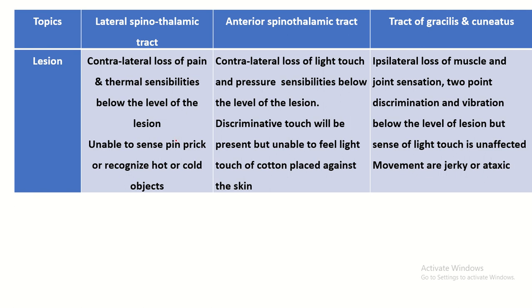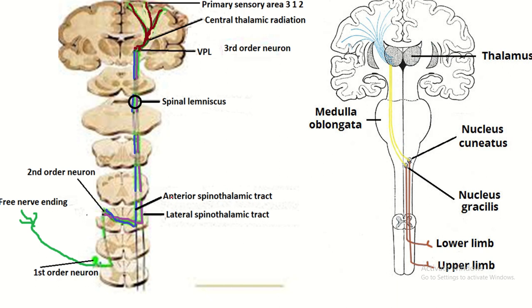Lesions of the lateral spinothalamic tract cause contralateral loss of pain and thermal sensation below the level of lesion — unable to sense pinprick or recognize hot and cold objects. The anterior spinothalamic tract lesion causes contralateral loss of light touch and pressure sensation below the level of the lesion — discriminative touch with pressure but unable to feel light touch of cotton placed against the skin. Tract of gracilis and cuneatus lesion causes ipsilateral loss of muscle and joint sensation, two-point discrimination, and vibration below the level of the lesion, but sense of light touch is unaffected; movements are jerky and ataxic.